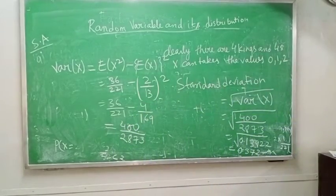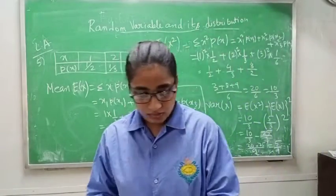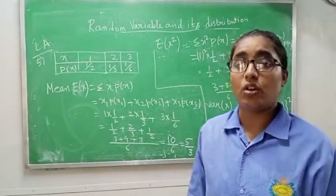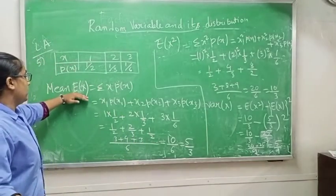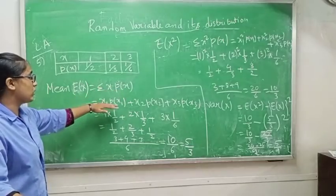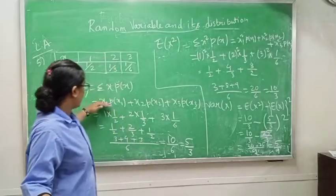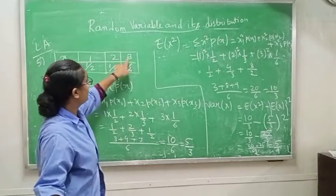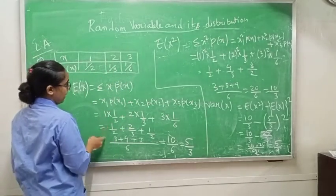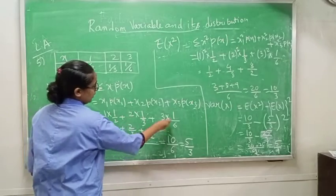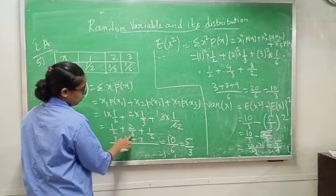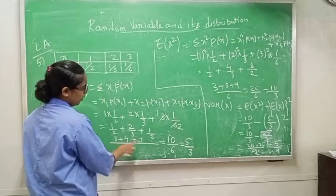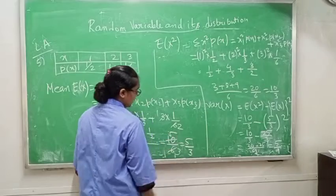Class 12, long answer question number 51. A probability distribution of discrete random variable X is given. Find mean and variance of X. Mean E(x) = x1·P(x1) + x2·P(x2) + x3·P(x3) = 1·(1/2) + 2·(1/3) + 3·(1/6). Taking LCM of 6: 3 + 4 + 3 = 10/6 = 5/3. Mean = 5/3.